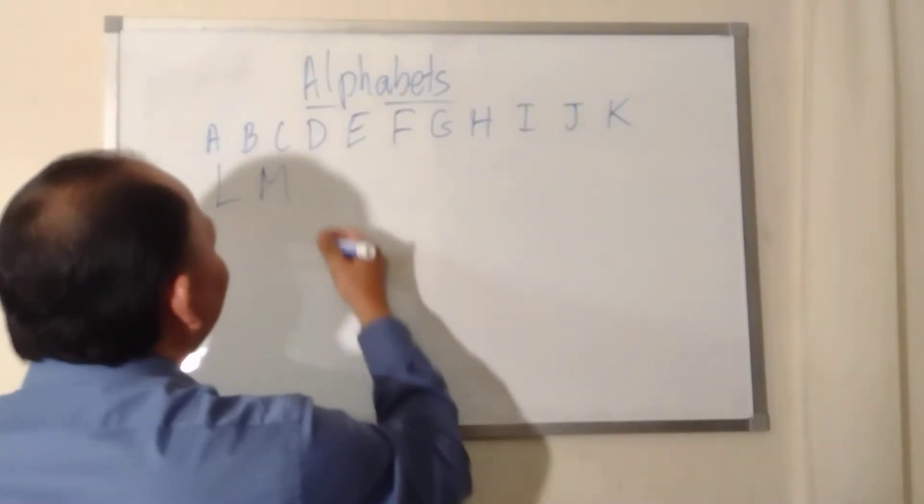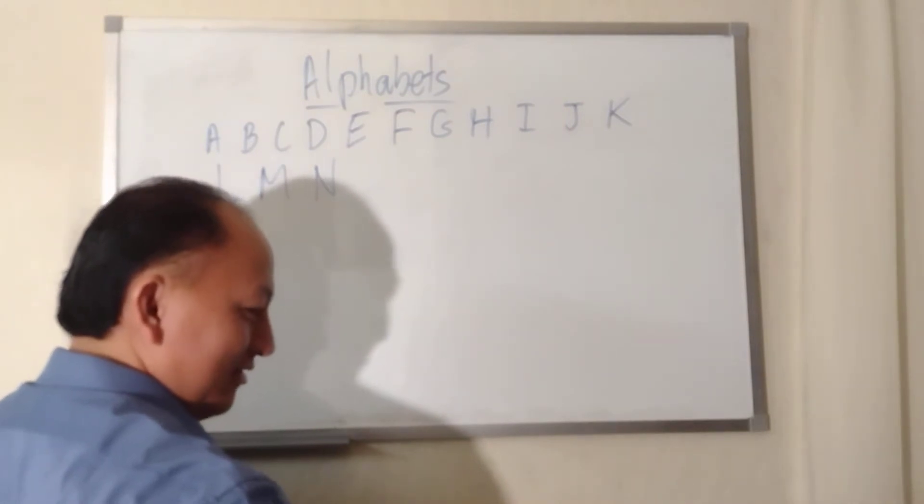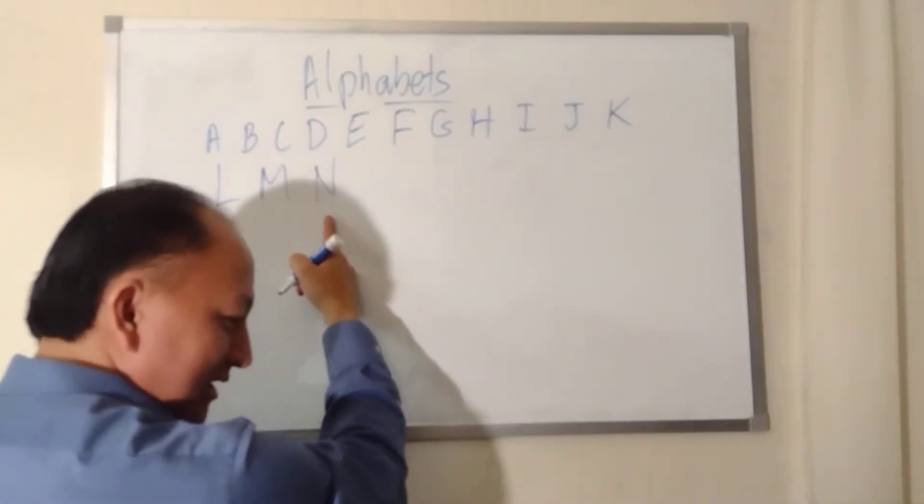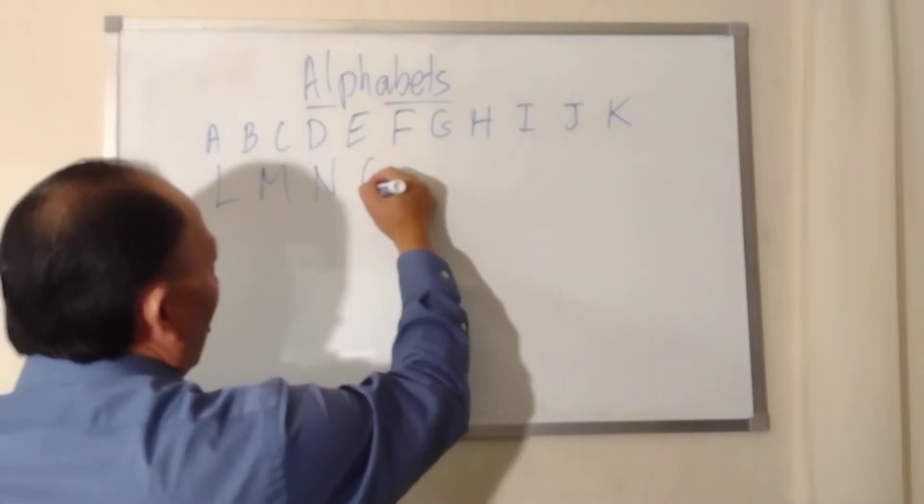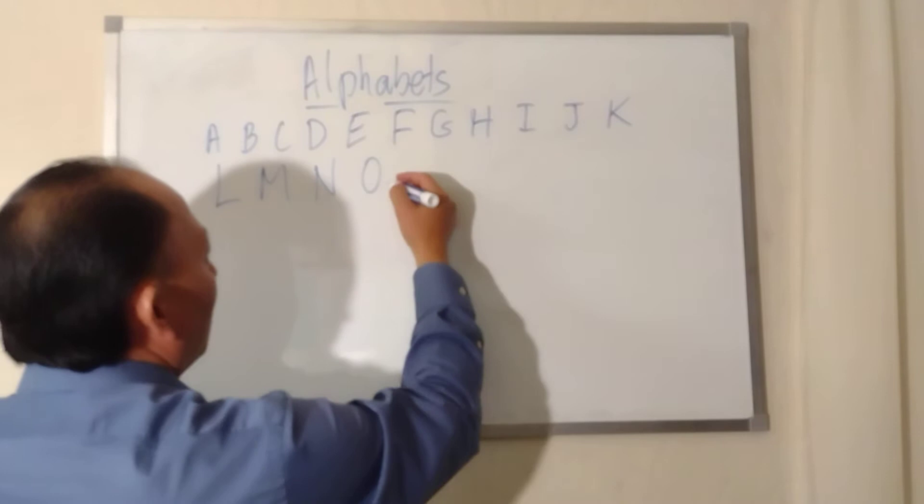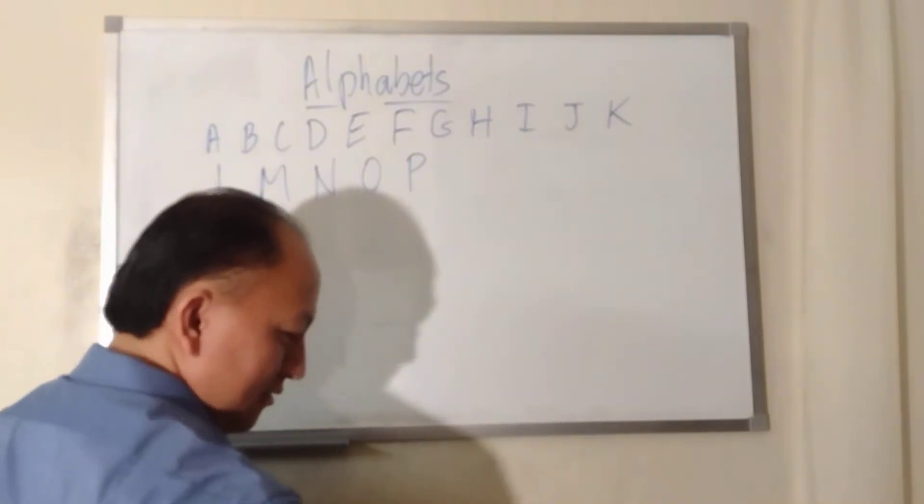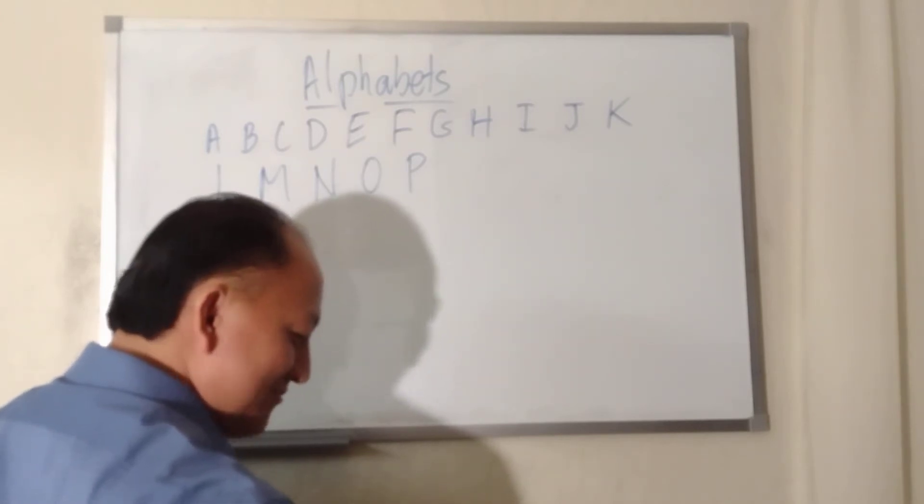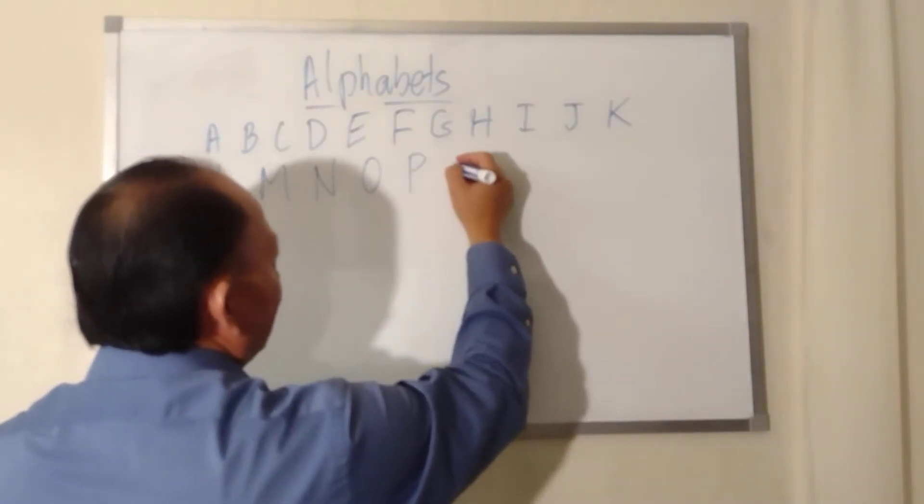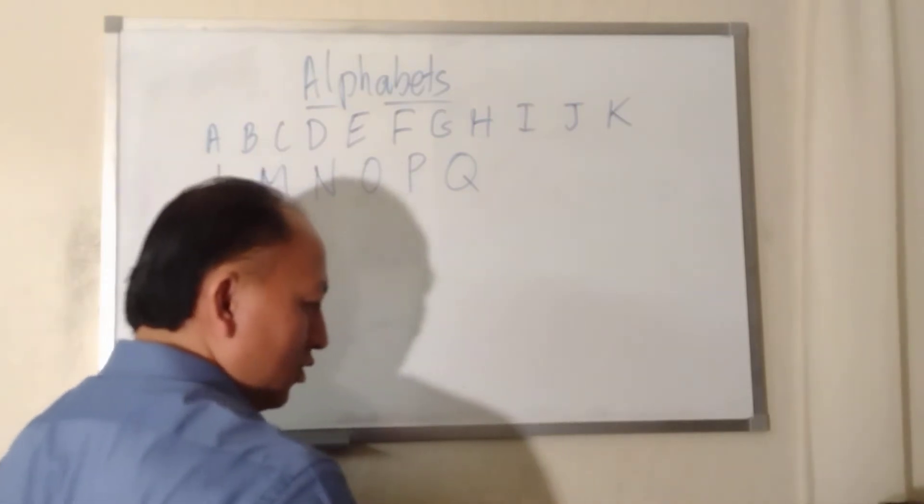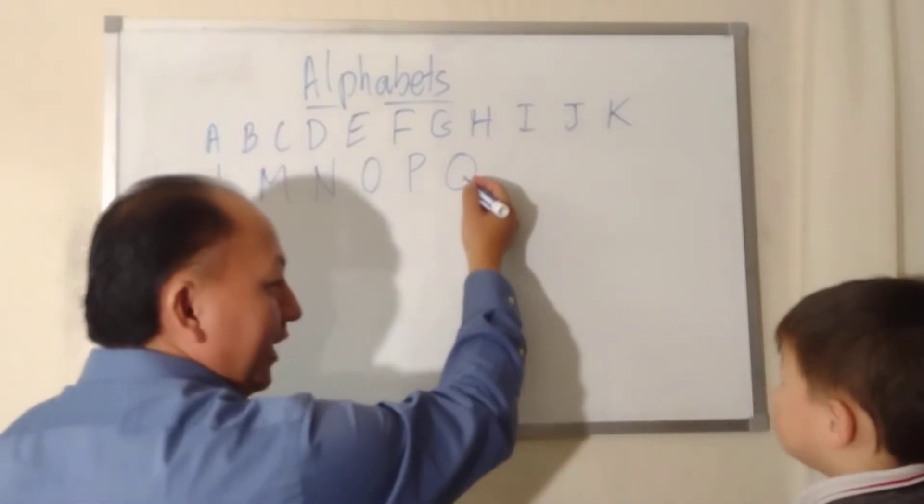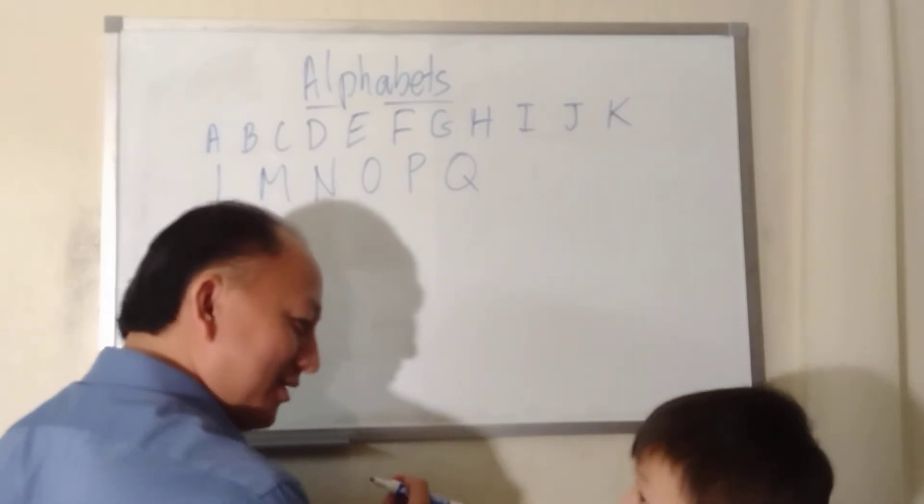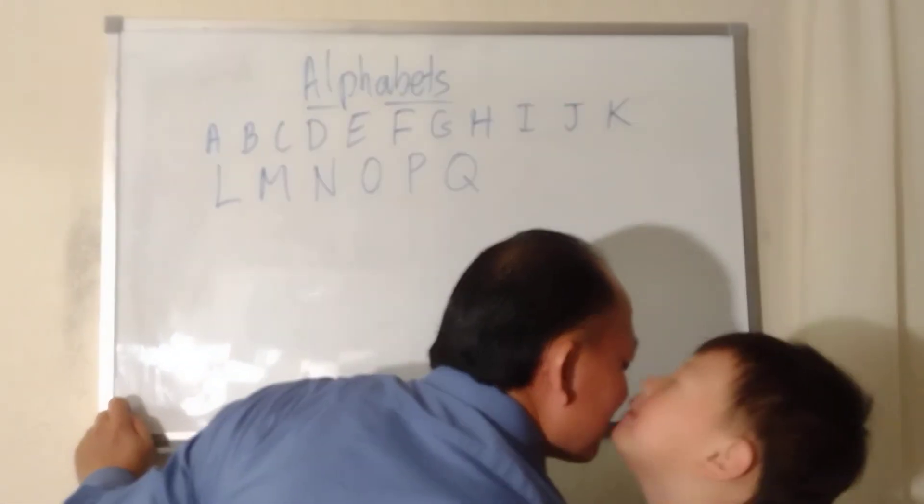How about N? You can say nice. Nice, yeah. O, orange. P, people, penguin. You know penguin? Yeah, okay. Q, queen, queen. Q, question. Yeah, you have a question. I asked you a question. I love you.